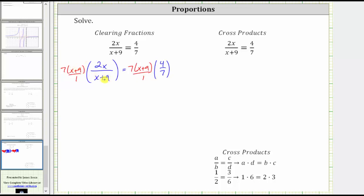Notice here we have a common factor of x plus nine. x plus nine divided by x plus nine simplifies to one. We now just have seven times two x, which is 14x.